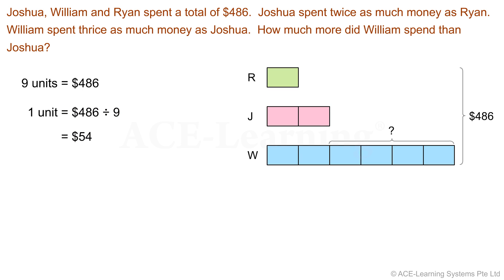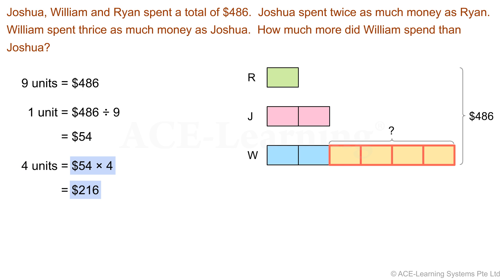And what are we to find? We need to find what 4 equal units represent. So 4 units = $54 × 4, which equals $216.